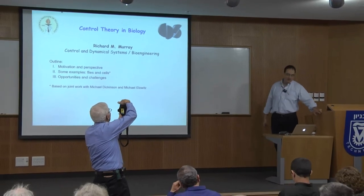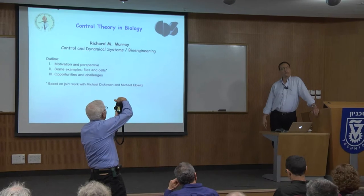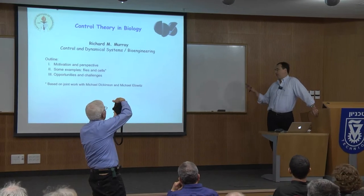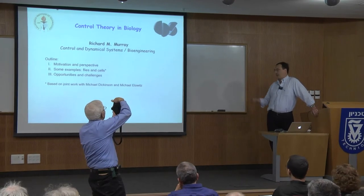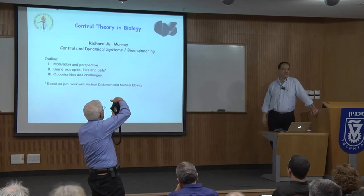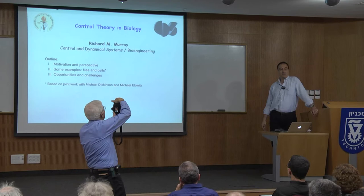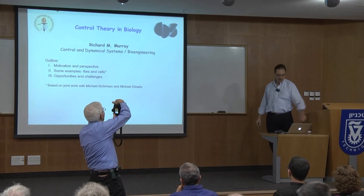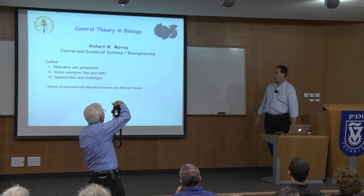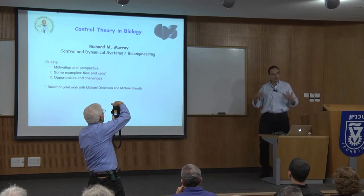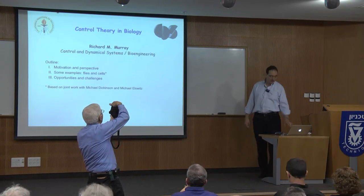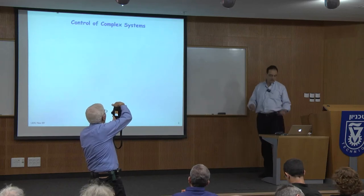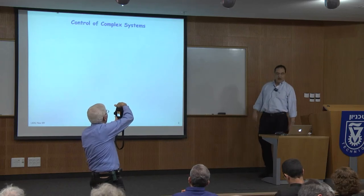Much of what I'll tell you today represents perspectives developed working jointly with a couple of biologists: Michael Dickinson, who's now at the University of Washington, and Michael Elowitz at Caltech. My broad interests are in the area of control of complex systems or network systems of one sort or another.